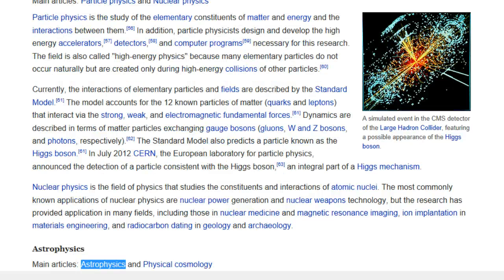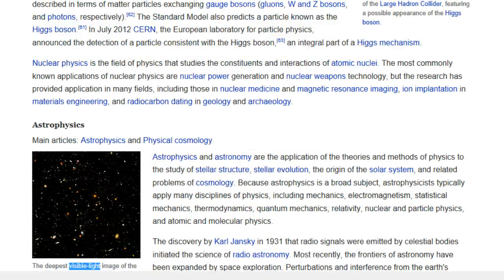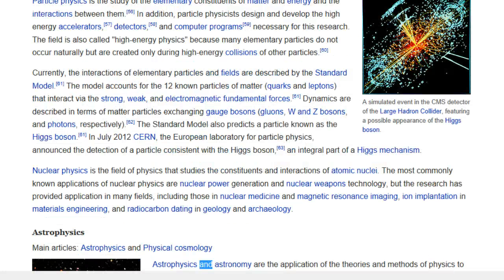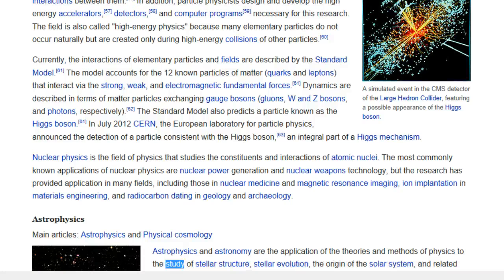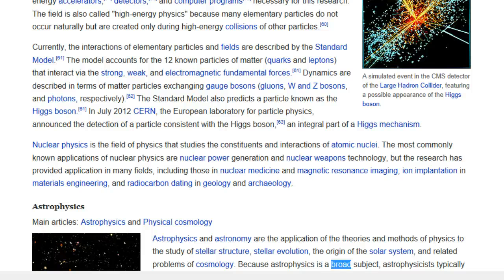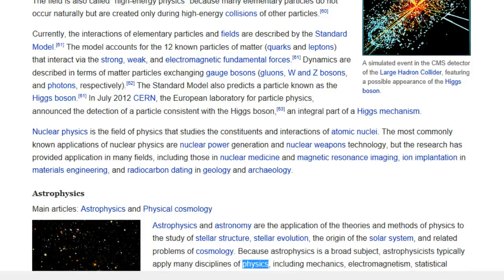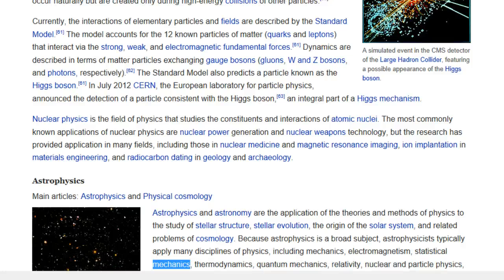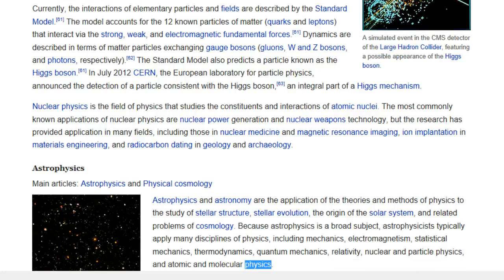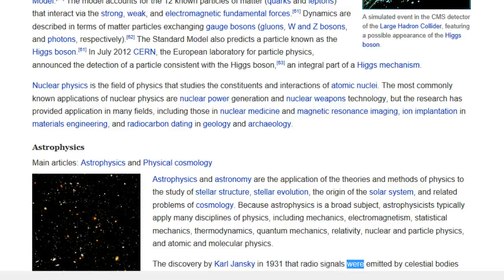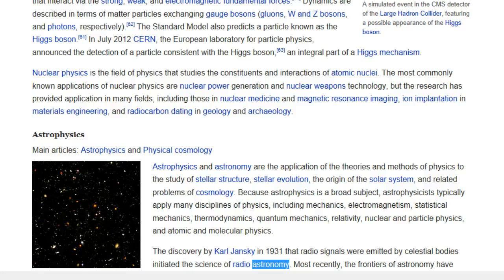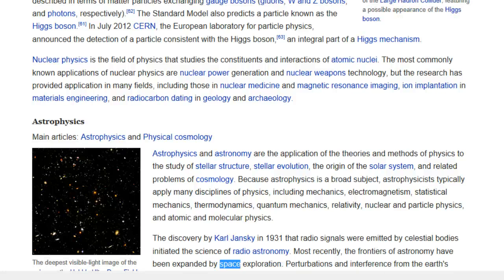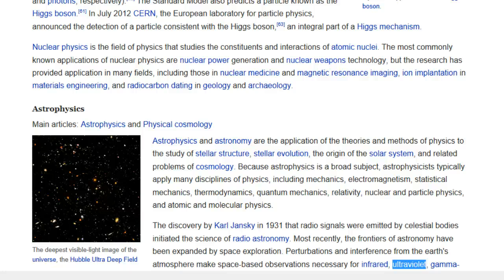Astrophysics. Main articles, Astrophysics and Physical Cosmology. The deepest visible light image of the universe, the Hubble Ultra Deep Field. Astrophysics and astronomy are the application of the theories and methods of physics to the study of stellar structure, stellar evolution, the origin of the solar system, and related problems of cosmology. Because astrophysics is a broad subject, astrophysicists typically apply many disciplines of physics, including mechanics, electromagnetism, statistical mechanics, thermodynamics, quantum mechanics, relativity, nuclear and particle physics, and atomic and molecular physics. The discovery by Karl Jansky in 1931 that radio signals were emitted by celestial bodies initiated the science of radio astronomy. Most recently, the frontiers of astronomy have been expanded by space exploration. Perturbations and interference from the Earth's atmosphere make space-based observations necessary for infrared, ultraviolet, gamma-ray, and X-ray astronomy.